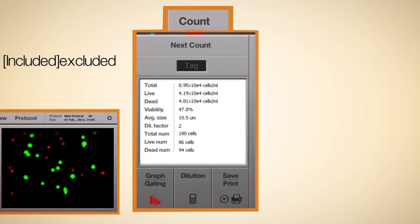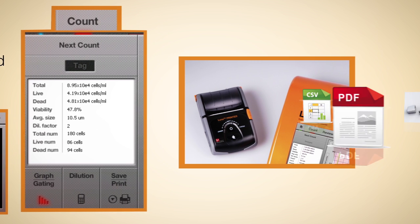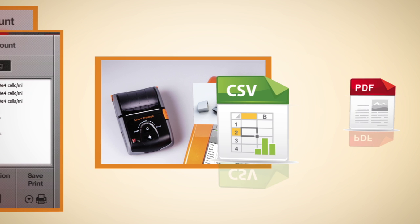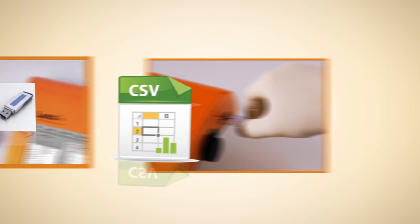The cell counting results can be printed on the Luna FL printer or easily saved as a PDF report or CSV file, along with the cell image data and various histograms, and transferred via a USB drive.